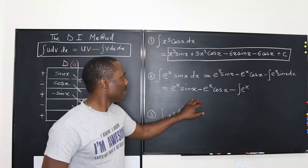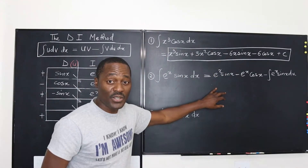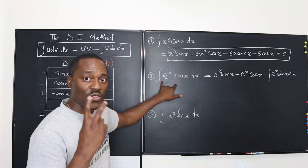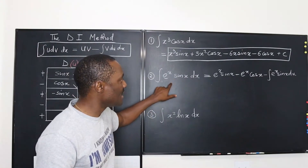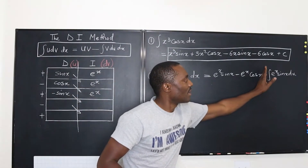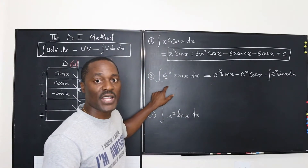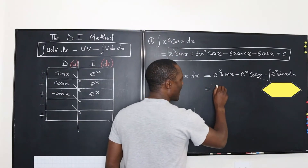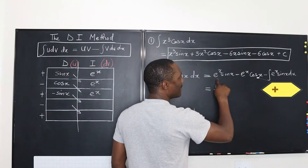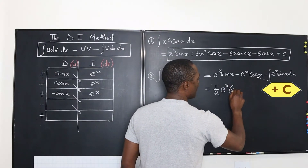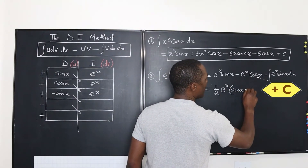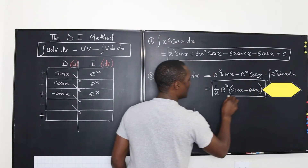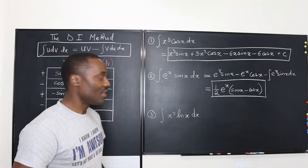So based on what we've got, you have this equal to E to the X sine X minus E to the X cosine X minus the integral of E to the X sine X dx. You can move this integral and add it to the other side — you're going to have two of them. Two of these will equal just the right-hand part. Then divide both sides by two, and our final answer will be one half of E to the X times (sine X minus cosine X). That's the answer to the second one, just from the table.